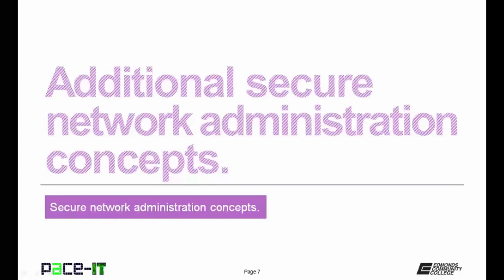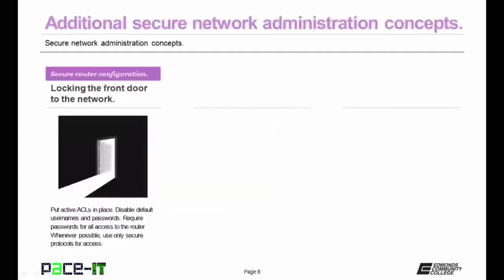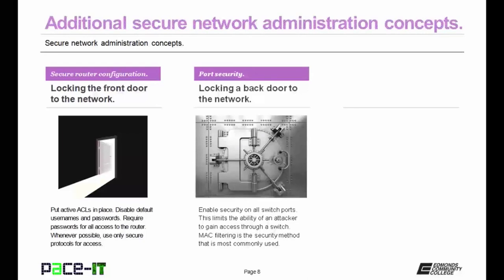Now let's move on to some additional secure network administration concepts. The first one is secure router configuration — that's locking the front door to your network. Put active ACLs in place. Disable default usernames and passwords. Require passwords for all access to the router. And whenever possible, use only secure protocols to access the router. Then there's port security on switches — this is locking a back door to the network. Enable security on all switch ports to limit the ability of an attacker to gain access through an open switch port. MAC filtering is the security method most commonly used to secure switch ports.